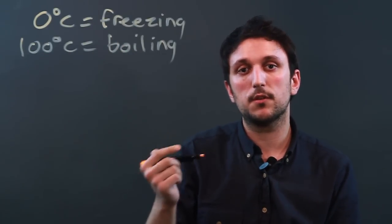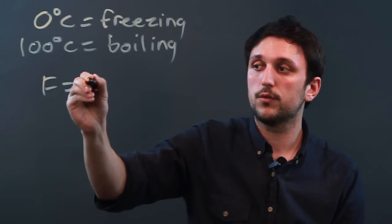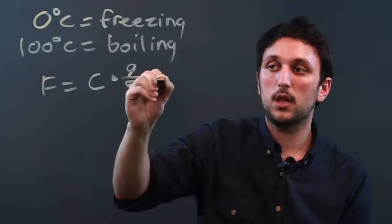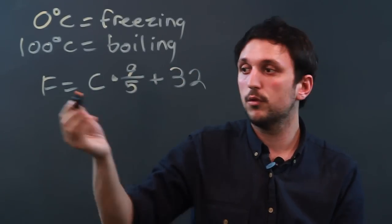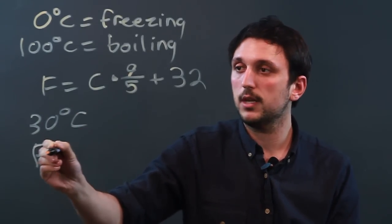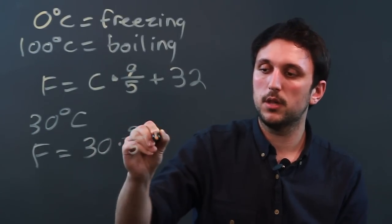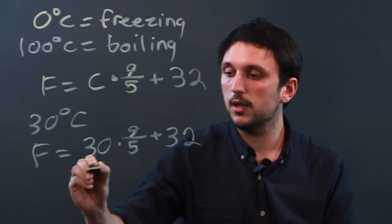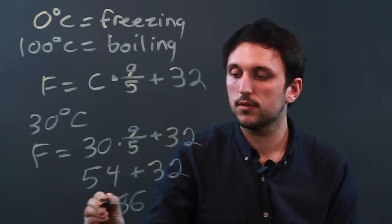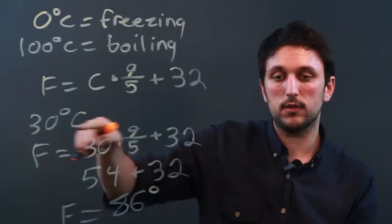Now if we want to convert from Celsius to Fahrenheit, we have the formula where Fahrenheit equals C times 9/5 plus 32. So if we have 30 degrees Celsius and we want to know what it is in Fahrenheit, we say F equals 30 times 9/5 plus 32. 9/5 of 30 is 54, plus 32 is 86. So Fahrenheit is 86 degrees when Celsius is 30.